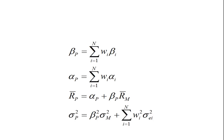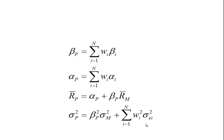To do portfolio analysis, we need a portfolio beta, which is just a weighted average of the betas of the stocks held, and a portfolio alpha, also a weighted average of the alphas. The expected return for the portfolio is alpha for the portfolio plus beta for the portfolio times the expected return of the market. The variance for the portfolio is beta for the portfolio squared times the variance of the market, plus terms relating to the variance of the error terms.